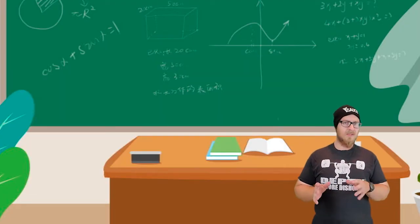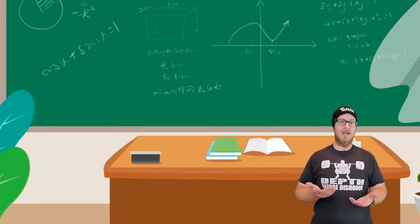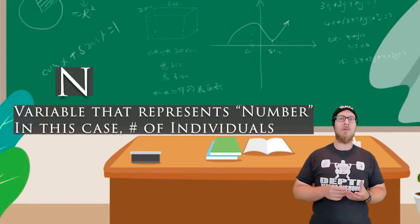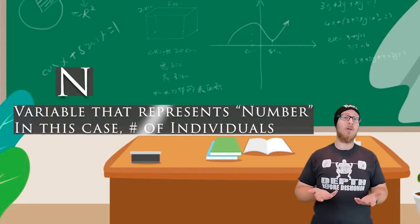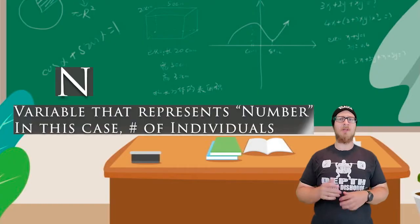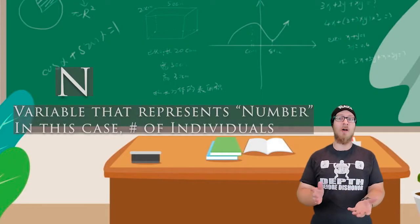To understand this graph, we need to look at a few factors. N is a variable that always represents number. In this case, we're looking at population growth, so it's the number of individuals.